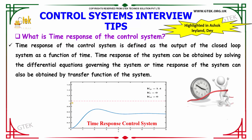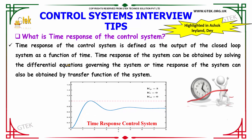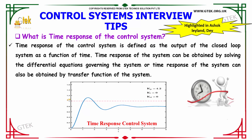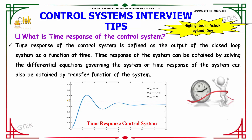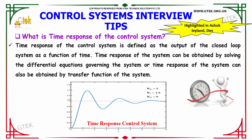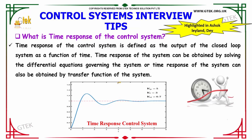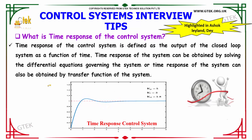What is the time response of the control system? The time response of the control system is defined as the output of the closed loop system as a function of time. The time response can be obtained by solving the differential equations governing the system, or equivalently from the transfer function of the system.